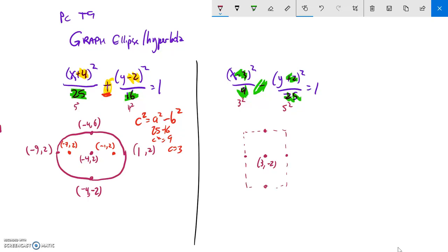Let me label these. If I go 3 in the x direction, add 3 to 3, that puts me at 6, same height. Take back 3, that puts me at 0, same height. Change of 5 in this direction, so same width but up 5 from there. Negative 2 plus 5 is 3. Negative 2 minus 5 is negative 7.